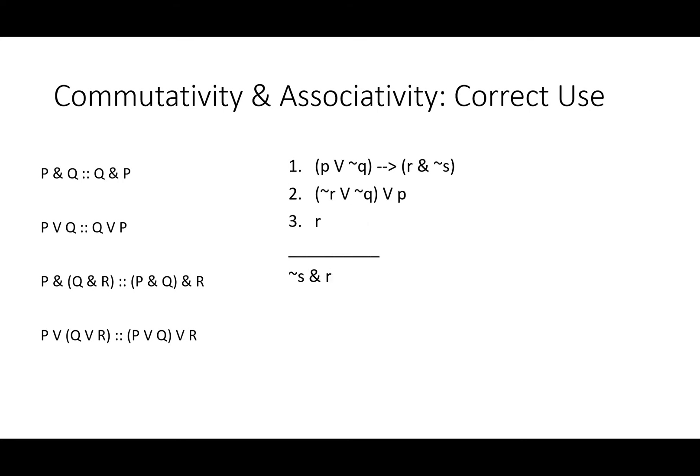Let's take a look at a slightly harder example. If either P or not Q, then R and not S. Premise two, either not R or not Q or P. Premise three, R. Therefore, not S and R. If we look backwards, the first thing we'll notice is that we're a commutativity away from having our conclusion be the same thing as the consequent of an antecedent. That's a good sign that we might want a modus ponens.